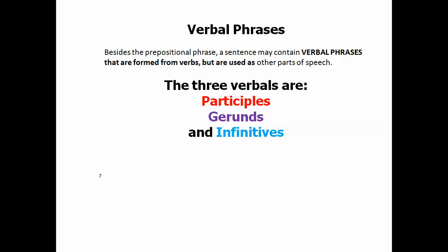Verbal phrases are phrases that contain verbs. And besides the prepositional phrase, these are three other types of phrases that you might find in a sentence. They're formed from verbs, but they're not being used as verbs, they're being used as other parts of speech. And that sounds complicated, but it isn't. It's really very simple. The three verbals are participles, gerunds, and infinitives. And we're going to look at them separately so that you'll understand them.